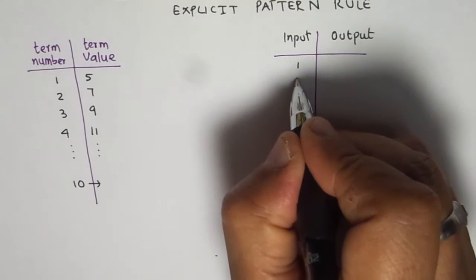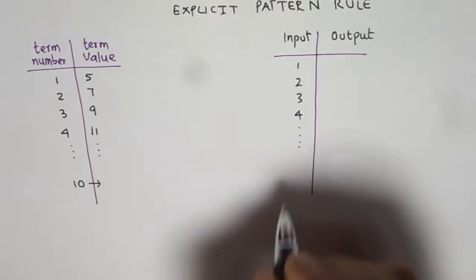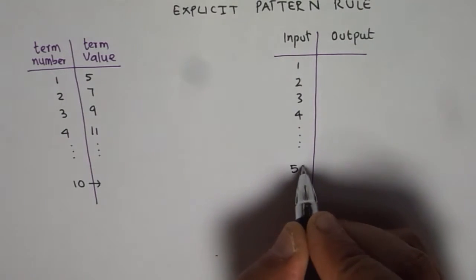Let us say the inputs are 1, 2, 3, 4 and so on. You need to find output for the 50th term.